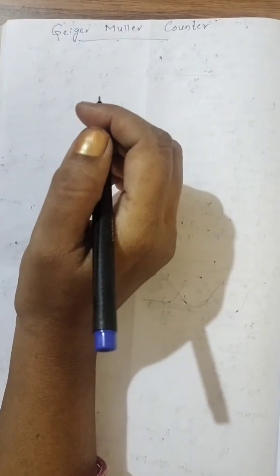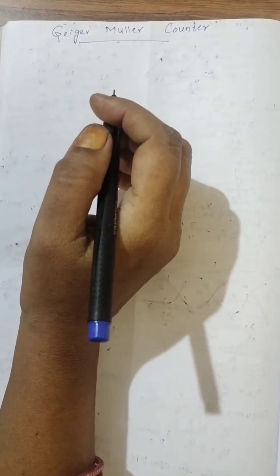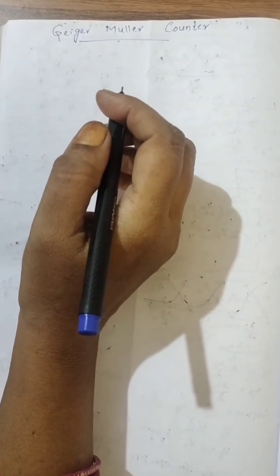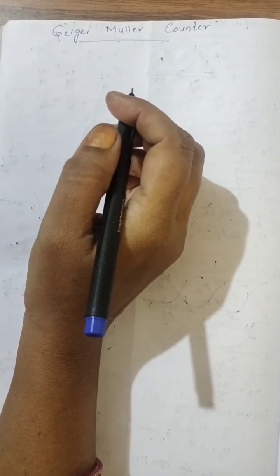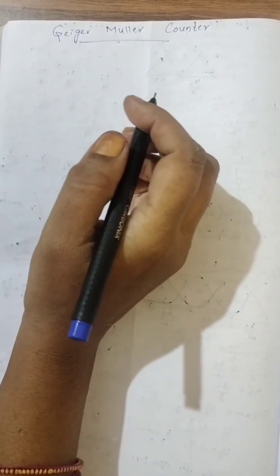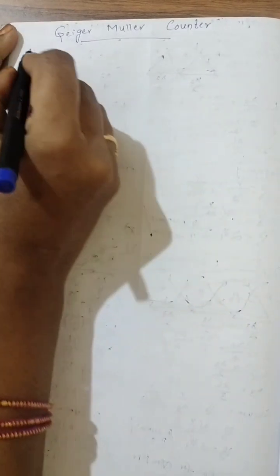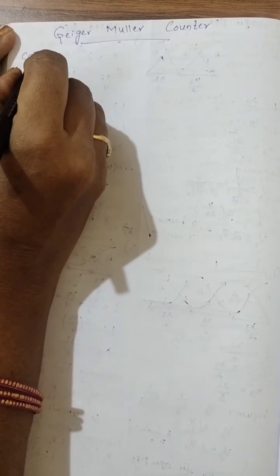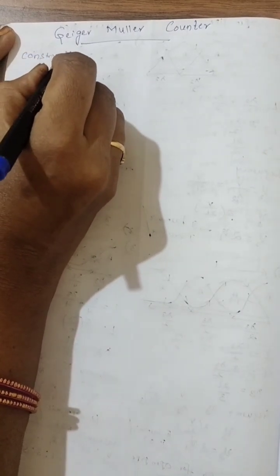Hello students, today's topic is the Geiger-Muller counter, GM counter. So first, as usual, let us see the construction of the GM counter.